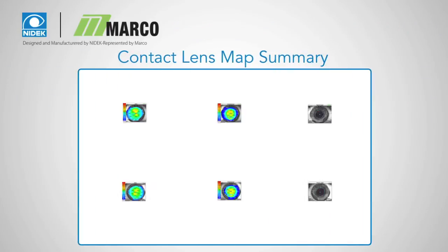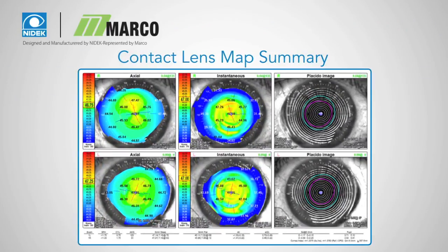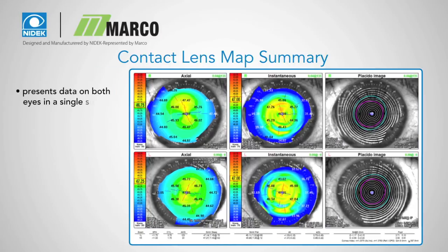The contact lens lab map summary is used to provide information to contact lens manufacturers and presents data on both eyes in a single summary. This information will be sent to your lab without transcription errors.